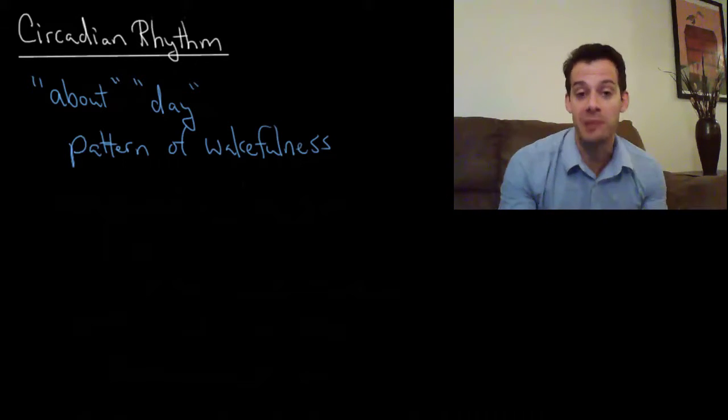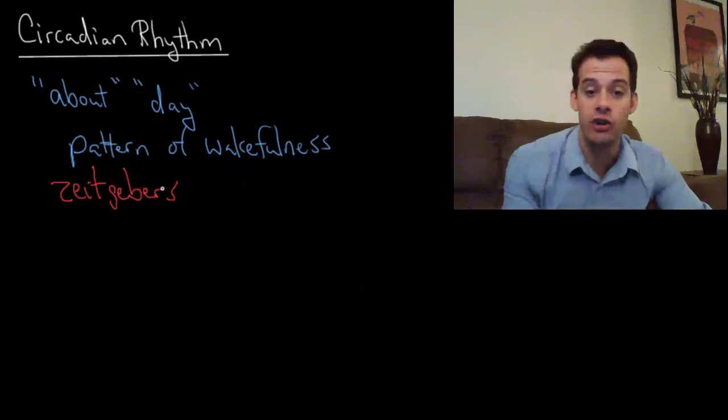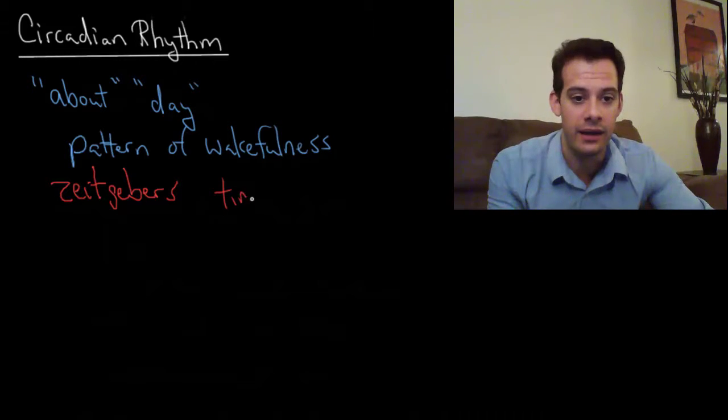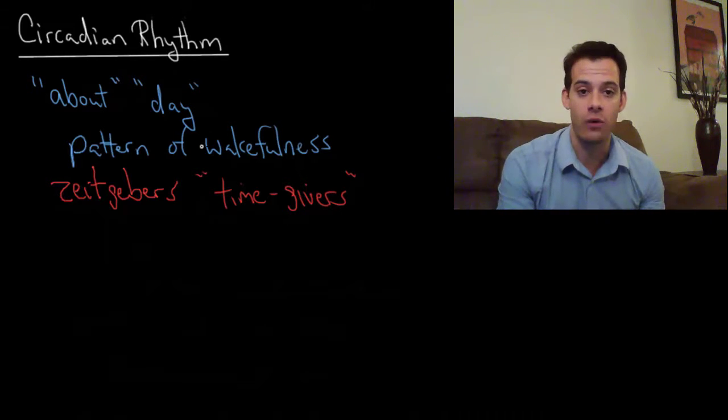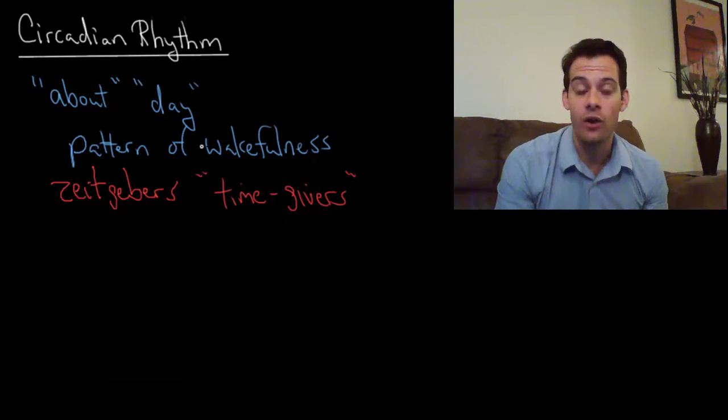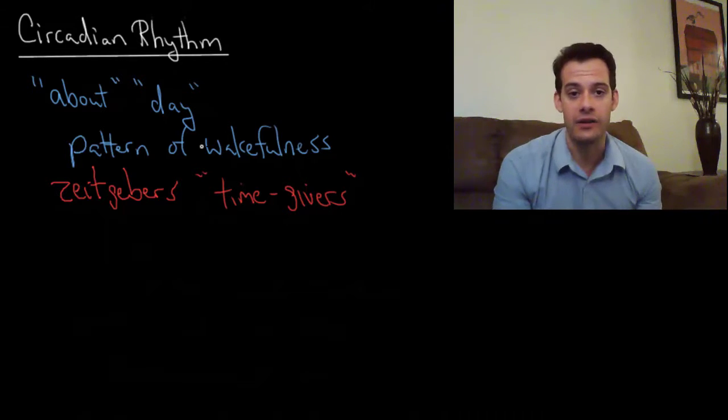So how is it doing this? This brings us to the factors that influence the circadian rhythm, and these are called zeitgebers. And this is German for time givers. Zeit means time and geber means giver. So we have time givers, these are zeitgebers. Things that set your circadian rhythm. They set your internal clock so that you will feel awake at certain times and tired at other times.